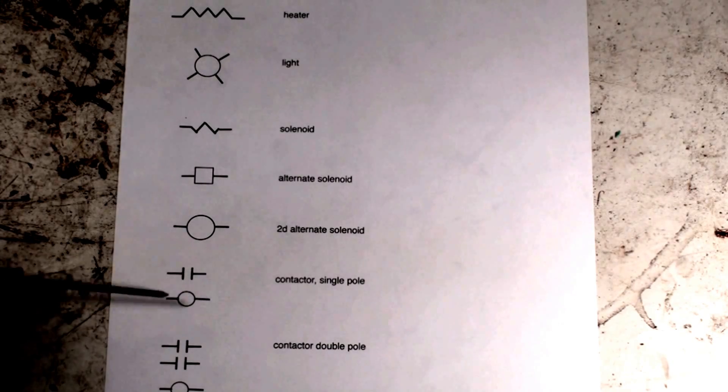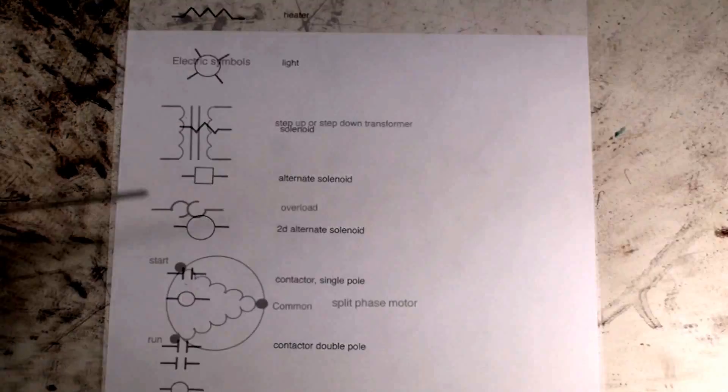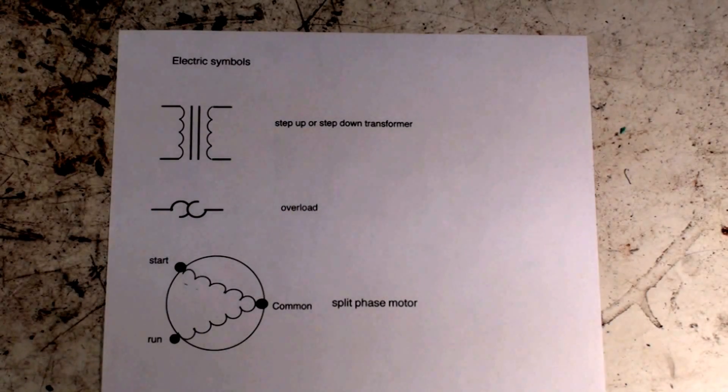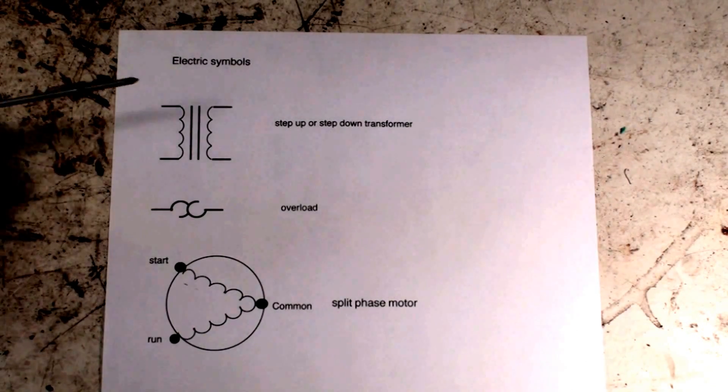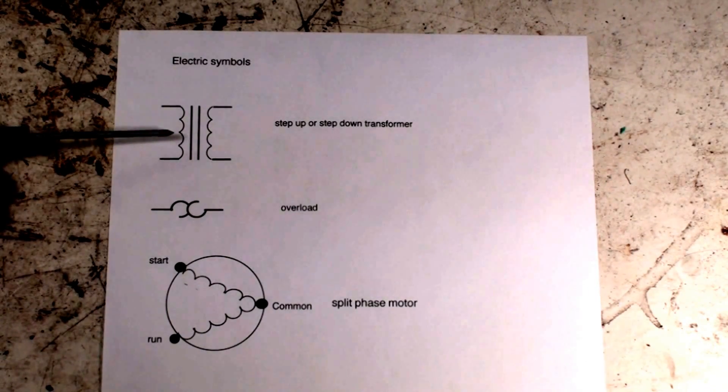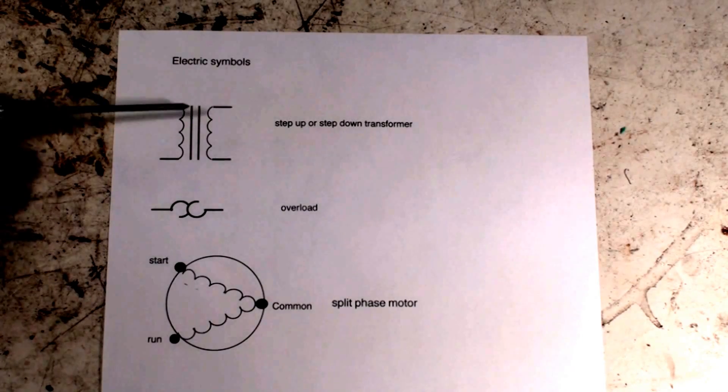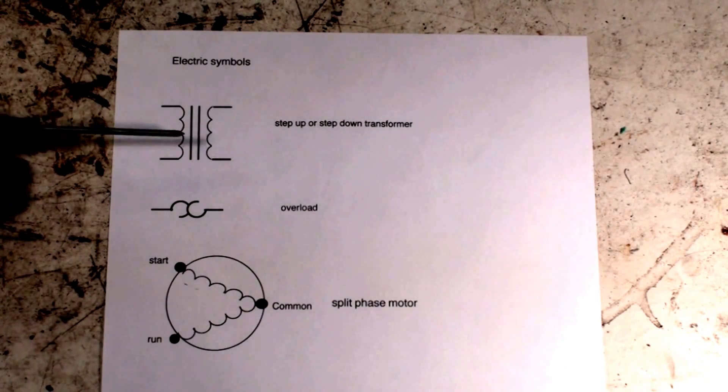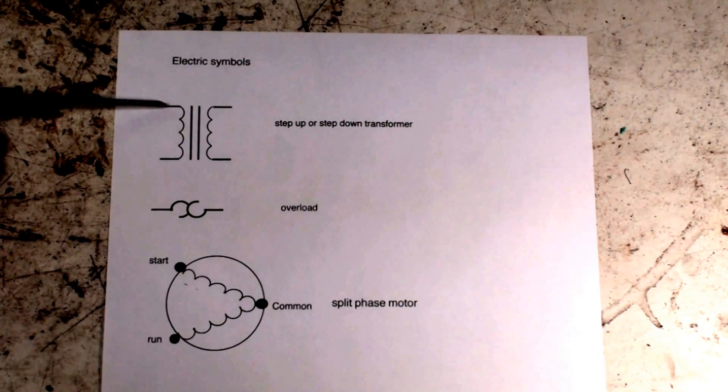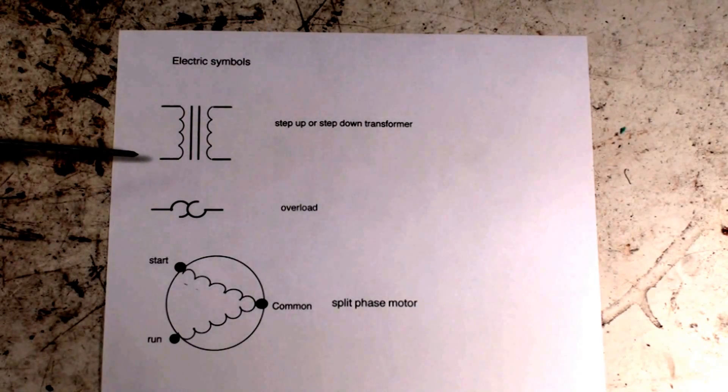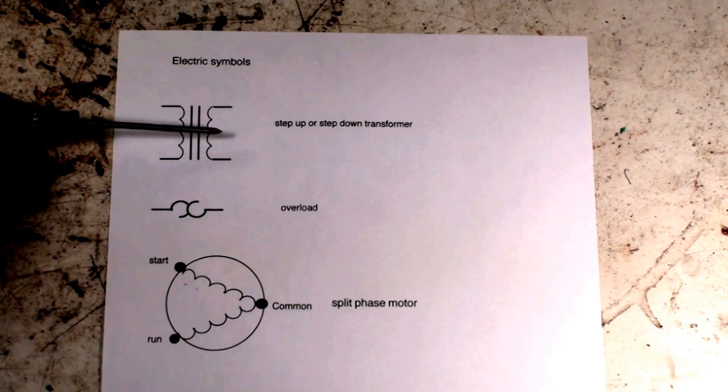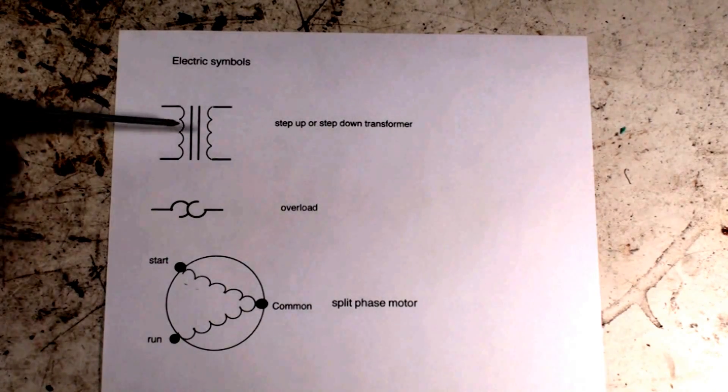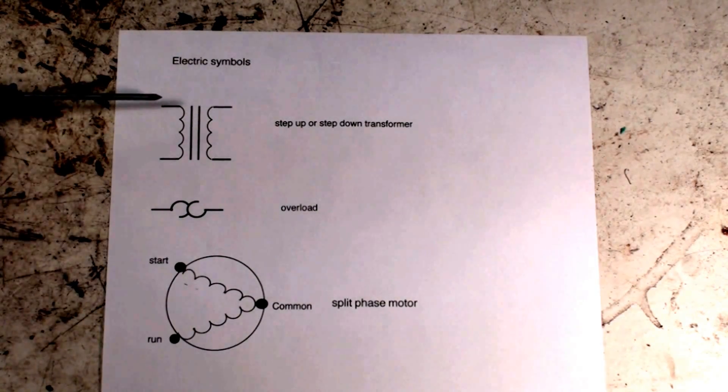Here we have some more types of symbols. Now this is a transformer, and this is the core, the transformer, the iron core. So let's say I had 120 volts coming in to this coil and it was set up to put 24 out. A lot of times they'll mark them 120-24, but that's a transformer.